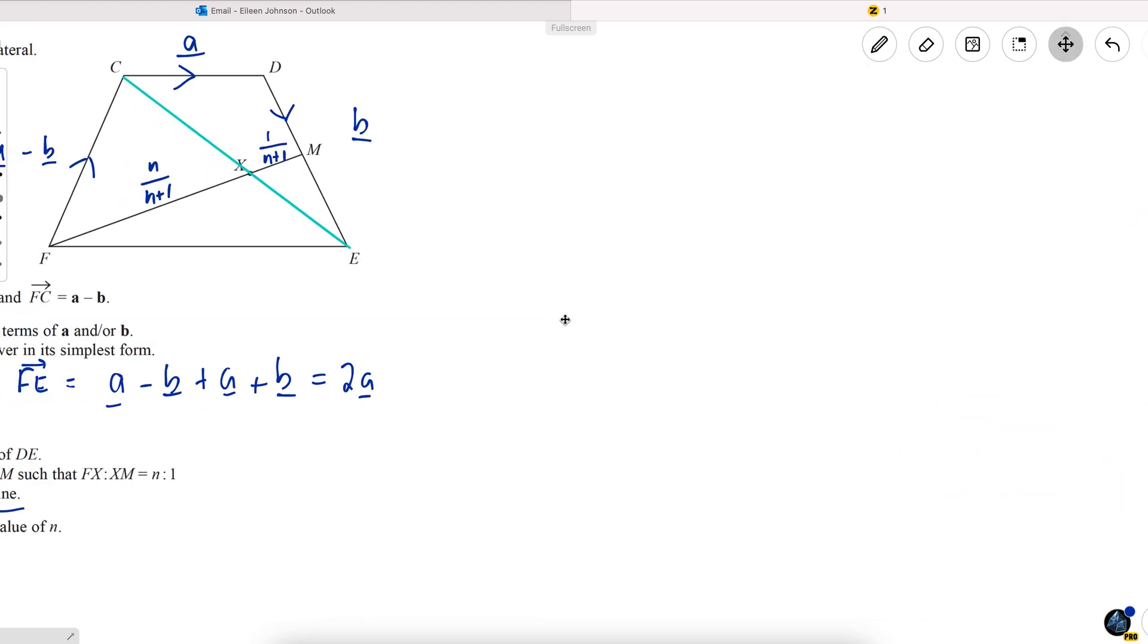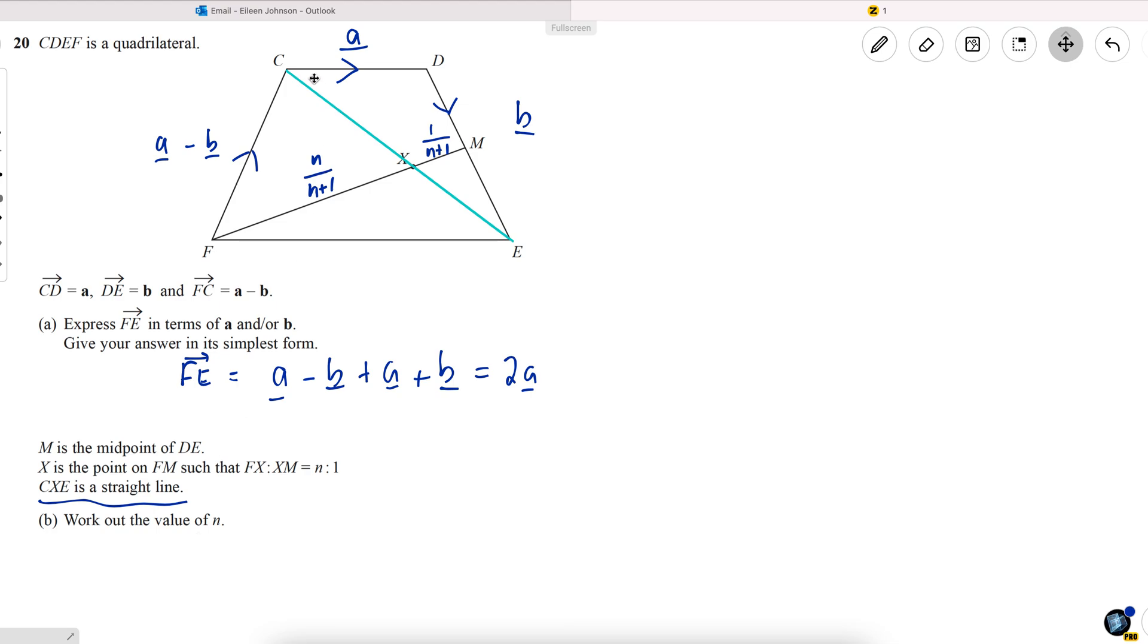So we're going to use that fact to work out N, and I'm going to compare the vector C to E with the vector C to X. I could use X to E equally, it's just that I've chosen that one, and I'd get the same answer either way. So first of all, the vector CE. So that's equal to A plus B. Well, that works out quite nicely because the coefficients of both of these are just one. That means the coefficient of A is equal to the coefficient of B, and so that's what we'll be looking for in the vector C to X.